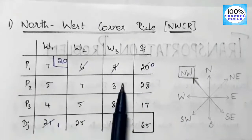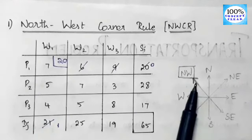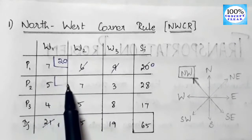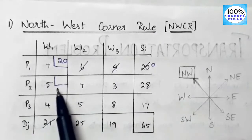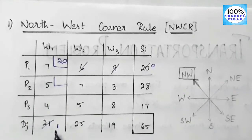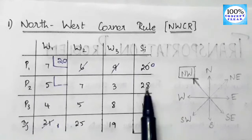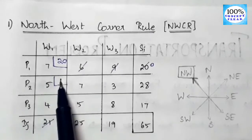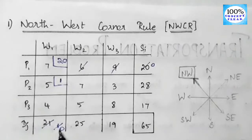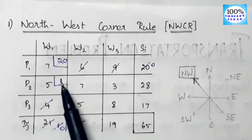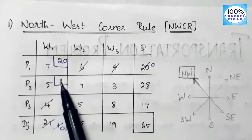From the remaining six cells, the northwest corner is the cell with cost 5 (P2–W1). Supply is 28, demand is 1; minimum is 1, so we allocate 1 here. The demand for W1 becomes 0 — cancel W1's column. Remaining supply for P2 is 28 − 1 = 27.